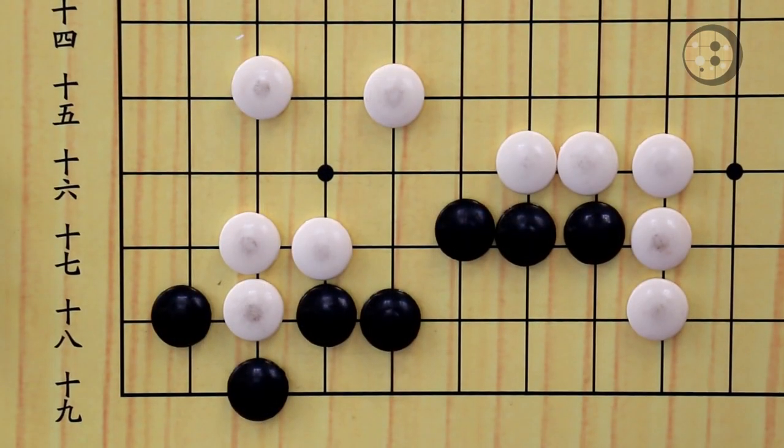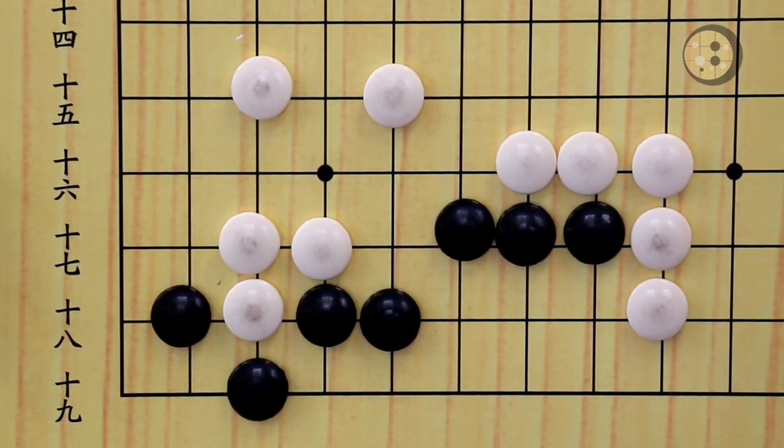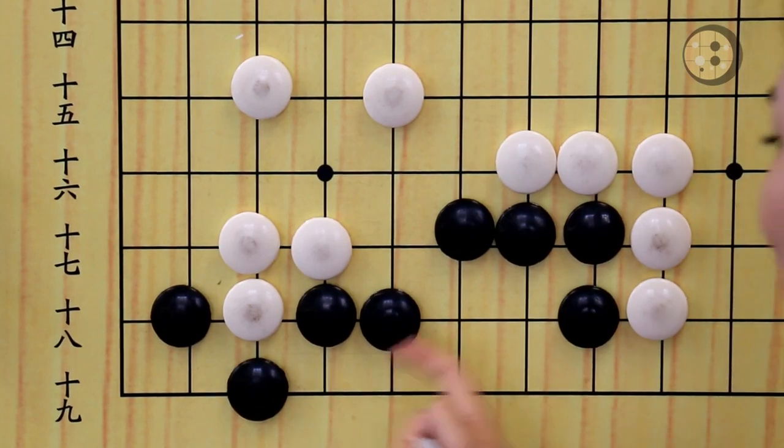Let's look at the second question now. The second question is also black to live. The first move for this question is also important. When you look at the question, you're already saying black now can block here. But after black blocks here, this bulky five.